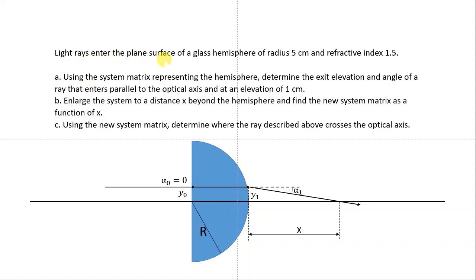The problem says that light rays enter the plane surface of a glass hemisphere of radius 5 centimeters and refractive index 1.5. Using the system matrix representing the hemisphere, determine the exit elevation and angle of a ray that enters parallel to the optical axis at an elevation of 1 centimeter. The second question asks to enlarge the system to a distance X beyond the hemisphere and find the new system matrix as a function of X. The last question asks to use the new system matrix to determine where the ray will cross the optical axis.